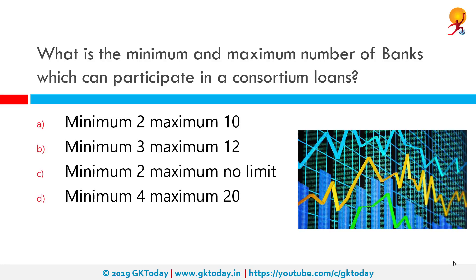What is the minimum and maximum number of banks which can participate in consortium loans? The correct answer is minimum 2, with no maximum limit. In the financial world, a consortium refers to several lending institutions that group together to jointly finance a single borrower. These multiple banking arrangements are very similar to loan syndication, although there are structural and operational differences between the two.